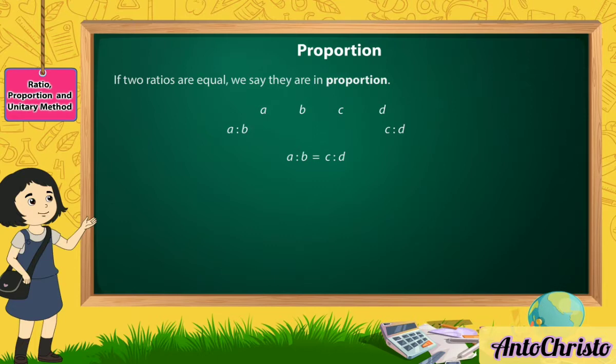Then we say A, B, C and D are in proportion. The symbol denoted by four dots can also be used to denote equality of two ratios, i.e., A is to B is equal to C is to D. Read as A is to B as C is to D, also means A, B, C and D are in proportion.